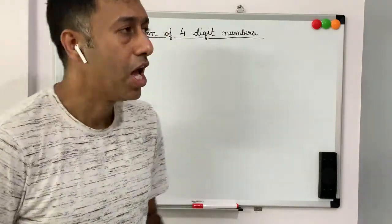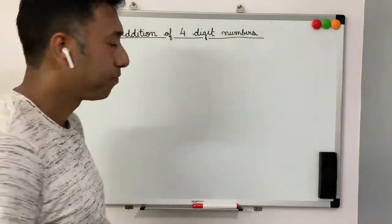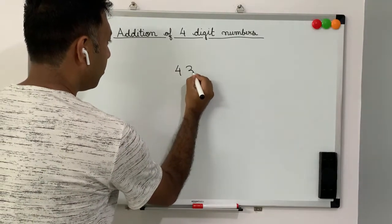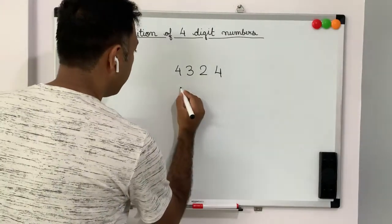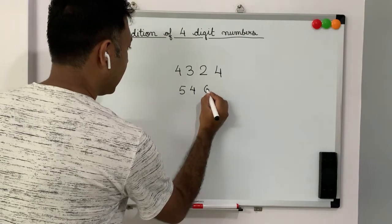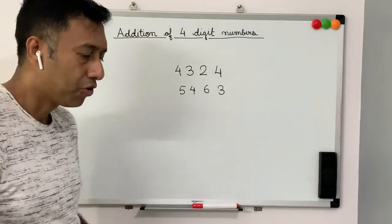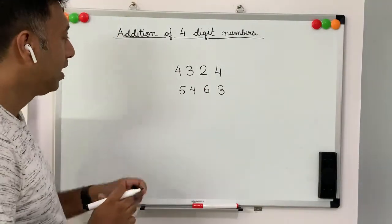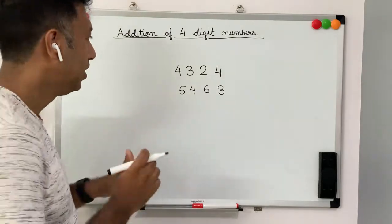So let's start. First of all, let's look at a typical question. So let's add these numbers 4, 3, 2, 4 and 5, 4, 6, 3. So how would we add these two numbers? First of all, let's put them in their respective houses.